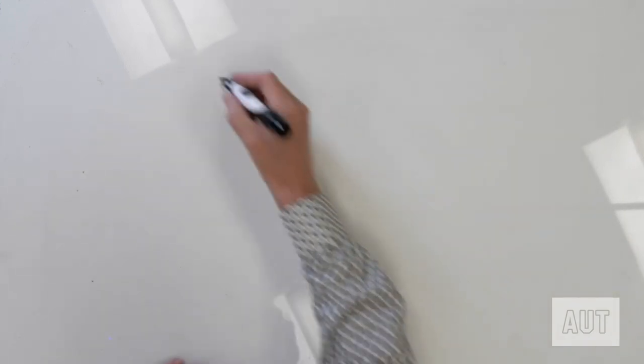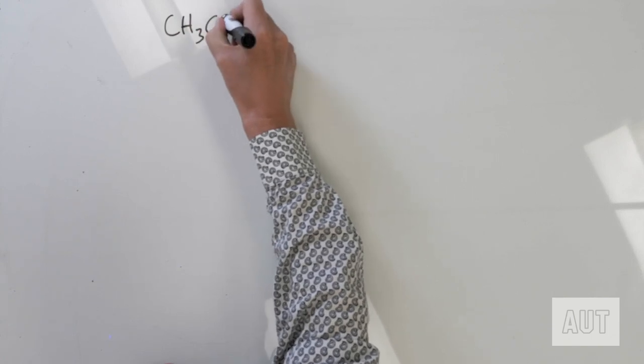So how do buffer solutions work? The answer is in the definition. A buffer solution works because it contains both a weak acid and its conjugate base. If you add acid to a buffer solution, it can react with the conjugate base of that weak acid. If you add base to a buffer solution, it can react with the weak acid. Using acetic acid and acetate as our example, let's say we've got a buffer solution that contains both acetic acid and acetate ion.